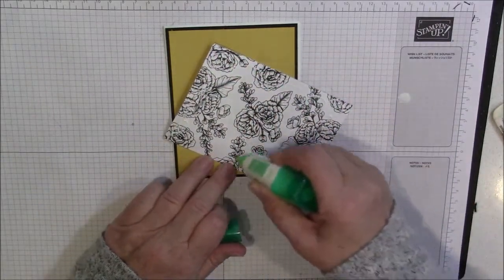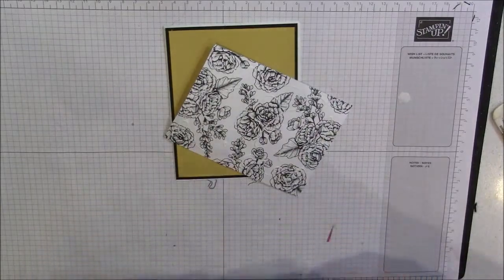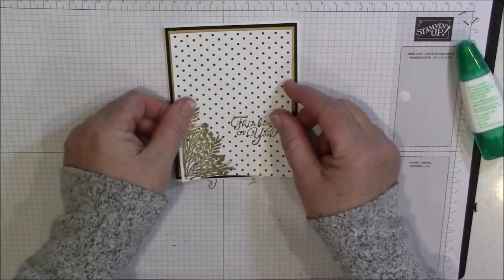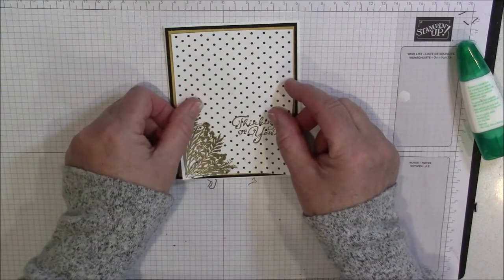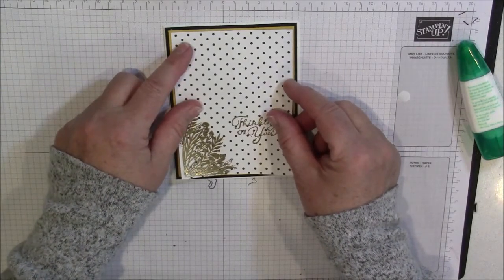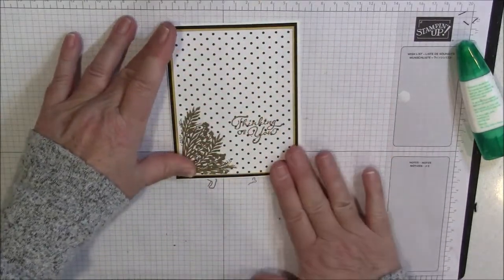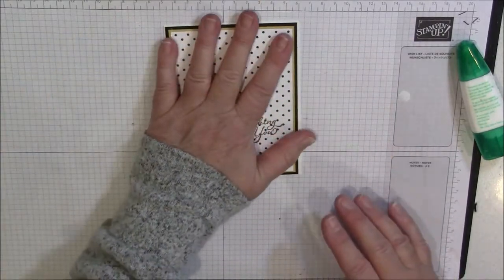Okay, let's layer our designer series paper on there. Like I was saying, if you want to wow your friends, do heat embossing, you guys. They will be amazed that you can do that and get that effect on your cards. Something very simple, but has such a wow factor. Okay, so we have that on there. Let's get our butterfly.